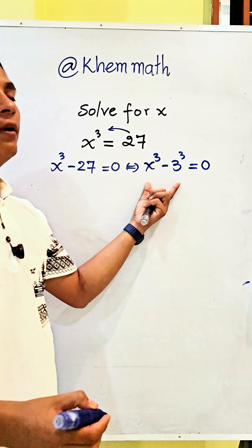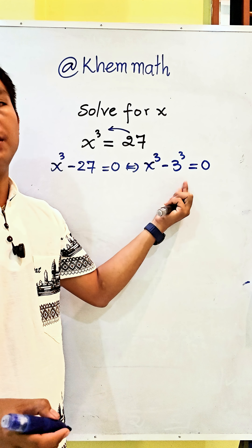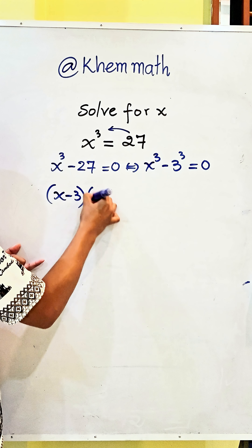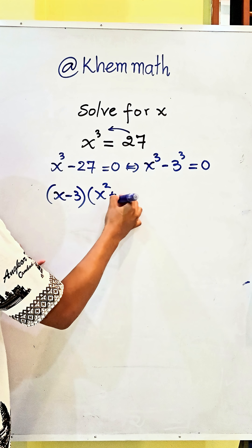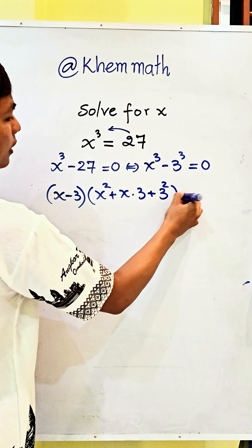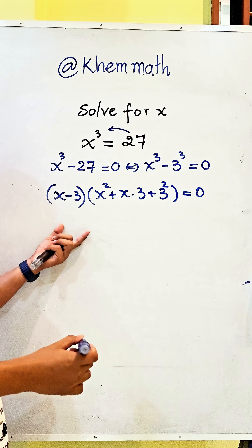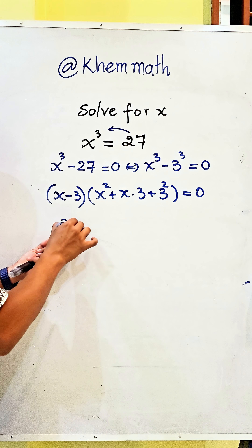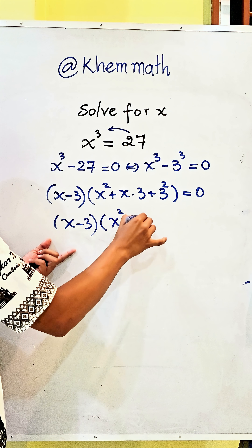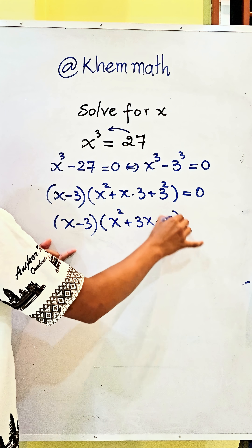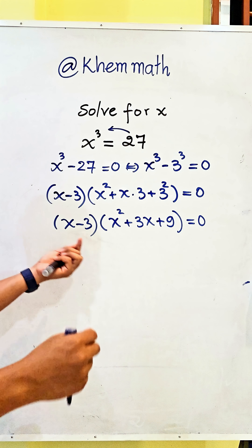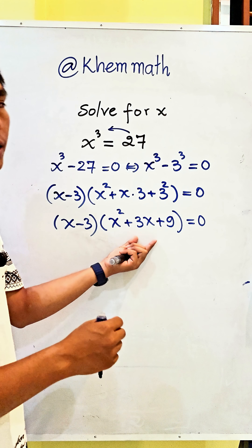Here we use the formula: a power 3 minus b power 3 is equal to (x minus 3) times (x squared plus x times 3 plus 3 squared) equals 0. And here we get (x minus 3) times (x squared plus 3x plus 9) equals 0. Here two factors equal 0, so we get this equals 0 and this equals 0.